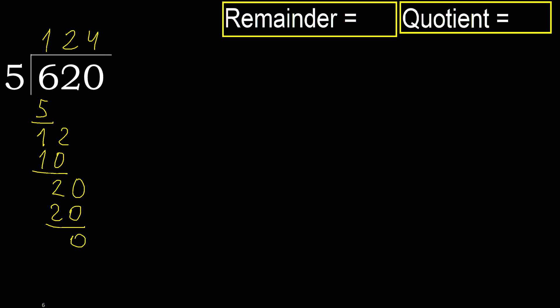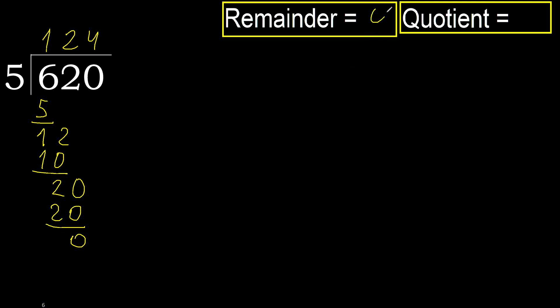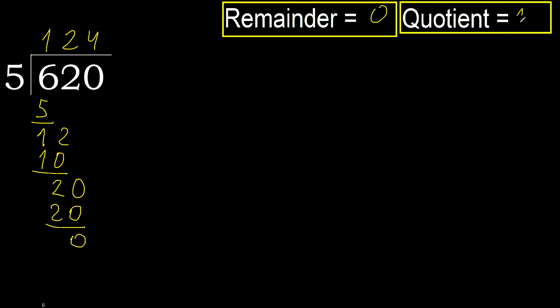There are no more digits, therefore finish it. 620 divided by 5 is 124.